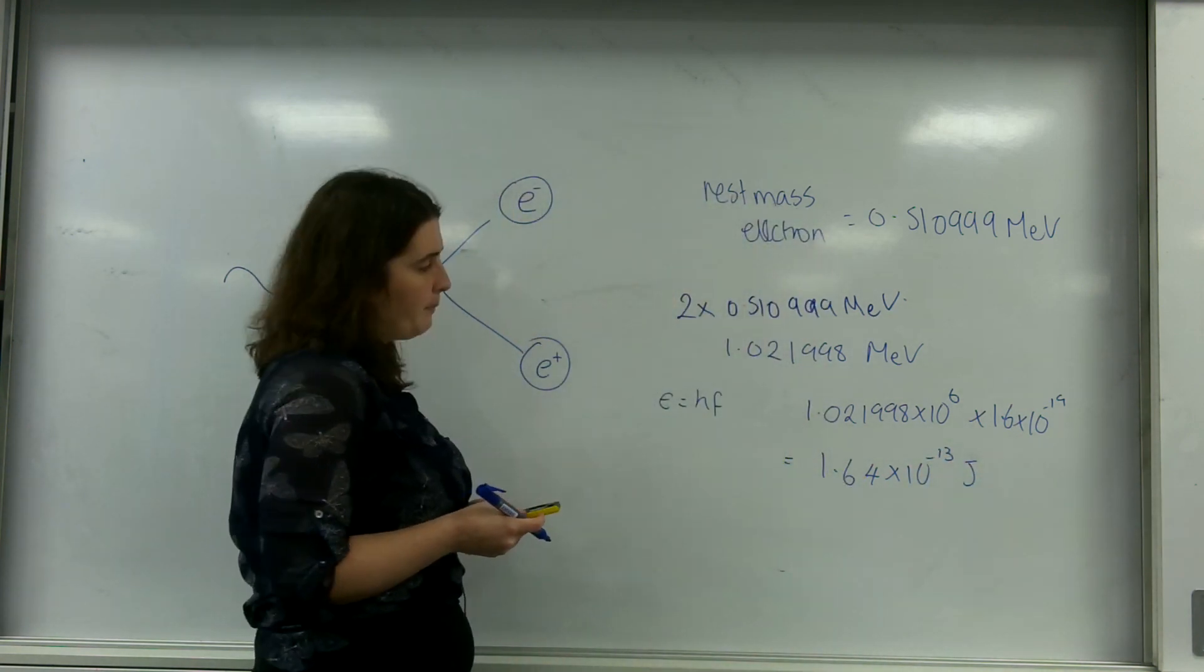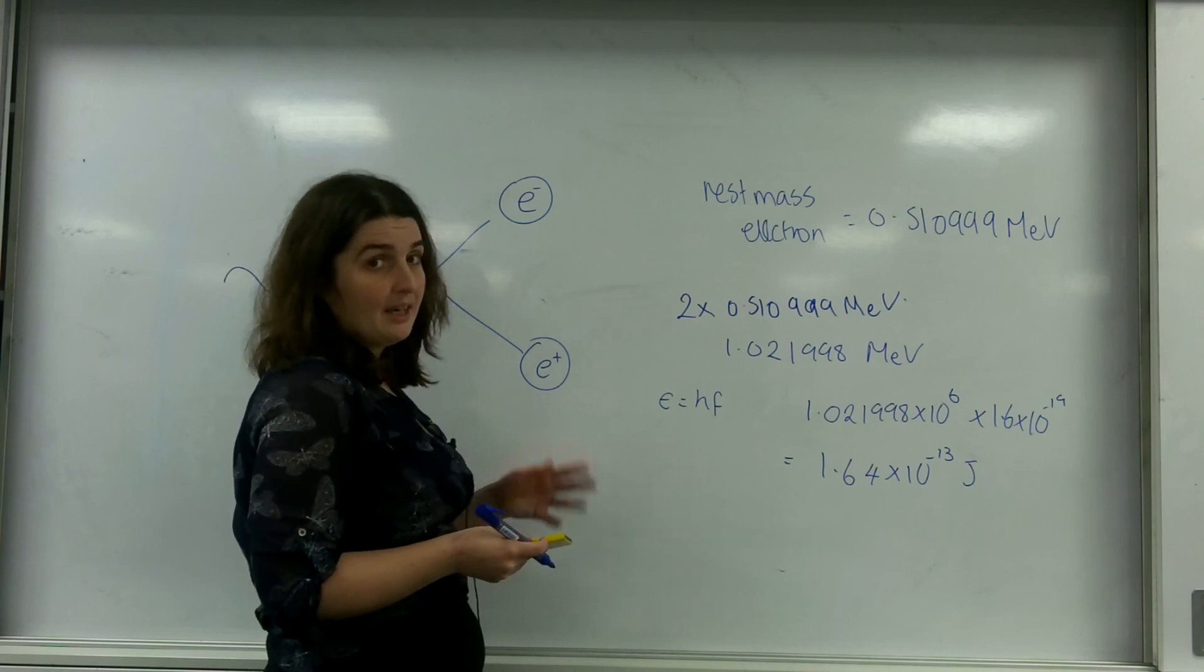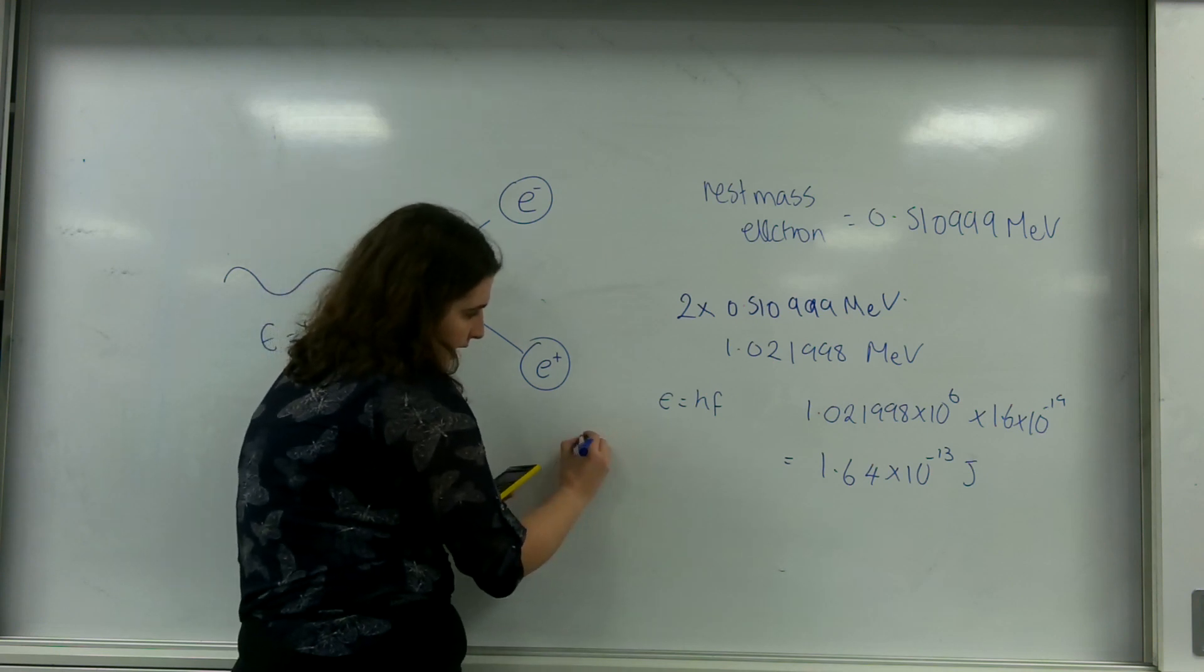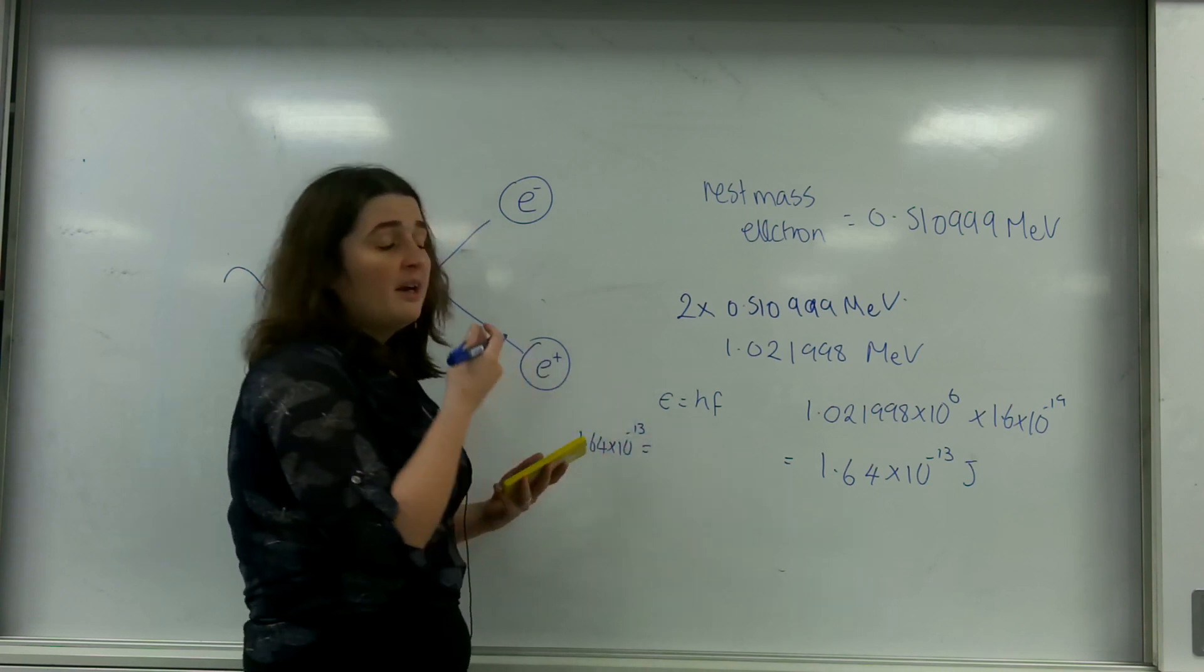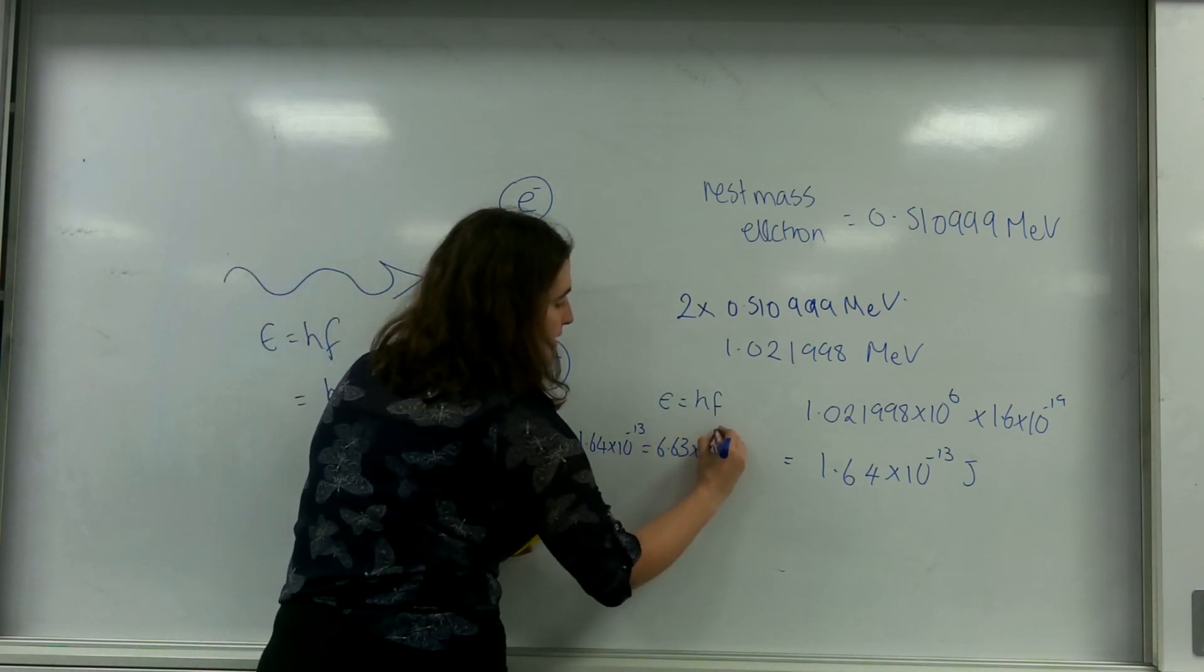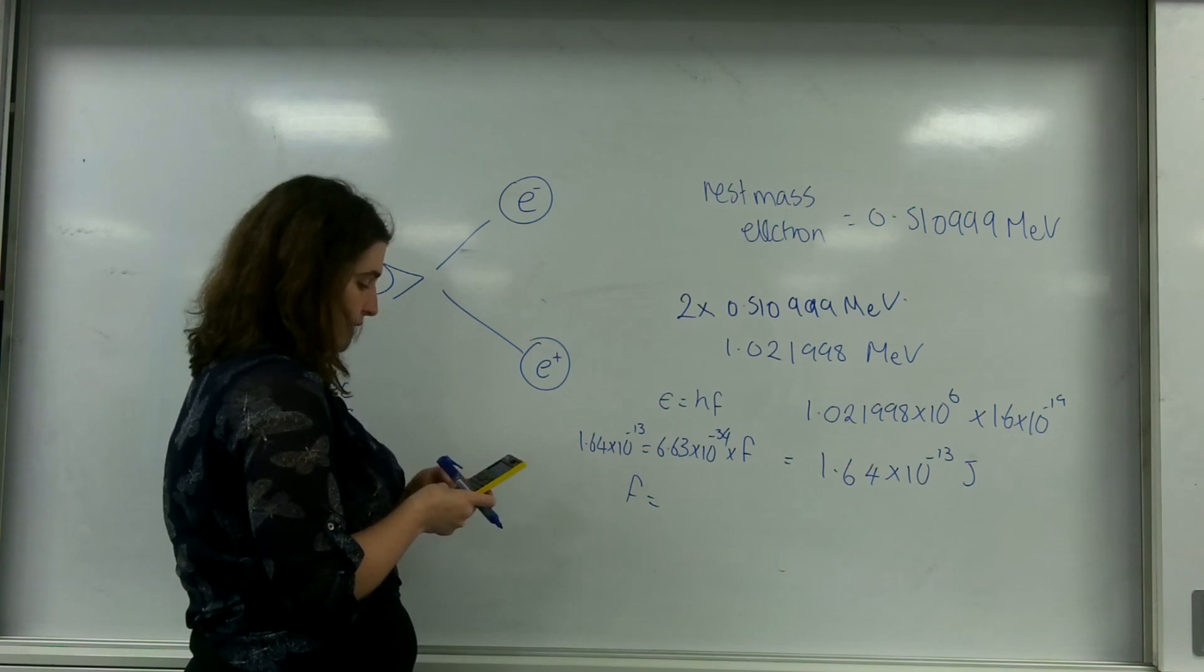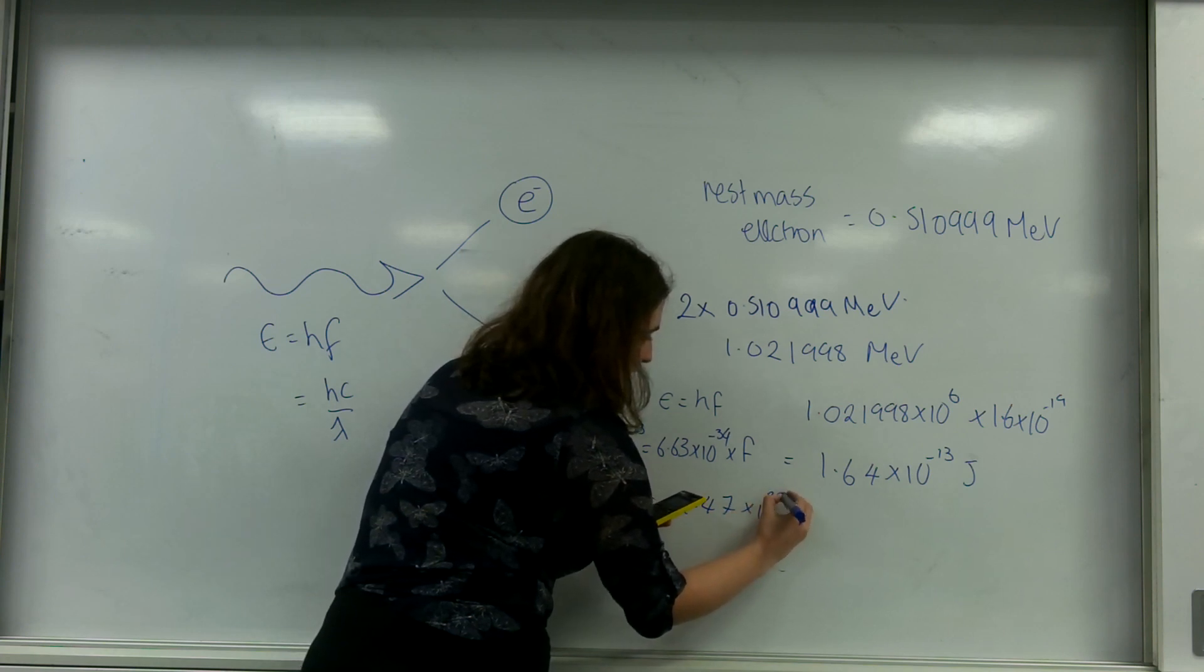Okay. Again it's a good sanity check, a photon should be a small amount of energy. You shouldn't have something into the giga or anything like that. You should always have something very small like minus 13. So putting it into this here I have 1.64 times 10 to the minus 13 equals 6.63 times 10 to the minus 34 times by frequency. So my frequency is 2.47 times 10 to the 20 hertz.